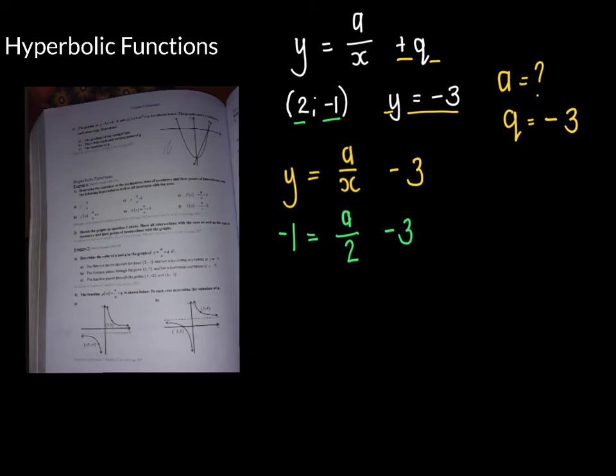Now we can solve for a. I'm going to take negative 3 over to the other side, I'm going to get positive. So I'm going to get negative 1 plus 3 equals a over 2. And negative 1 plus 3, that's just 2, is equal to a divided by 2. And then we're going to multiply both sides by 2 to get rid of it. So times by 2 on this side, times by 2 on this side. And that means therefore my a is equal to 4.